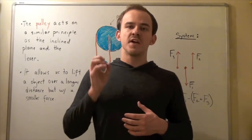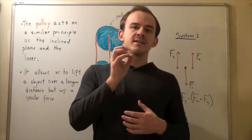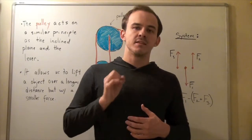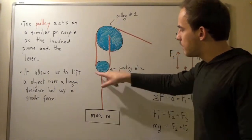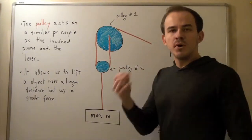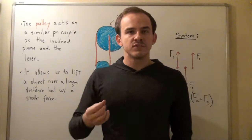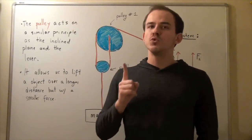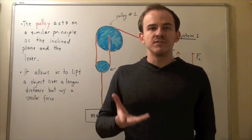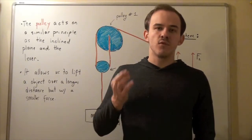Now the pulley acts on a very similar principle as does the inclined plane and the lever. And the pulley looks something like this, where we have pulley number one and pulley number two. Now the pulley allows us to lift or lower an object over a greater distance but using less force. So it allows us to lift a heavy object with less force.